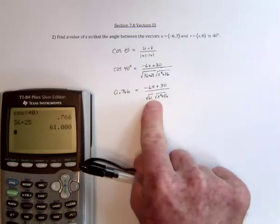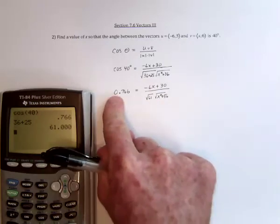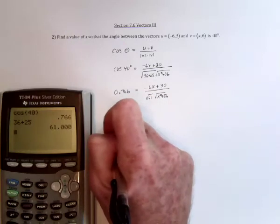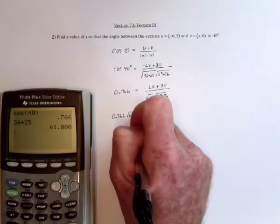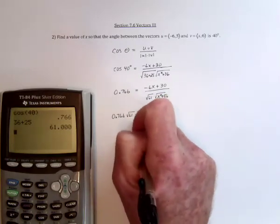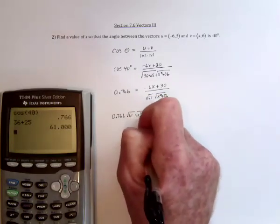And now we should clear the fraction by taking all of this stuff and multiplying it onto the left side. So we'd have 0.766 times the square root of 61 times the square root of x squared plus 36.